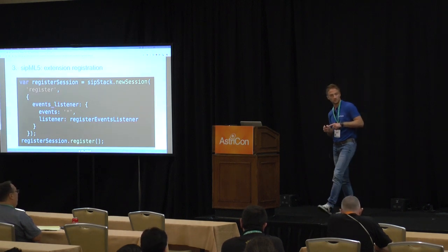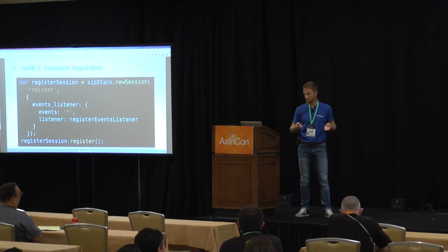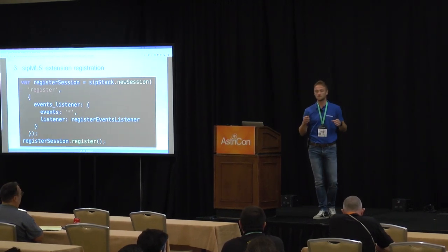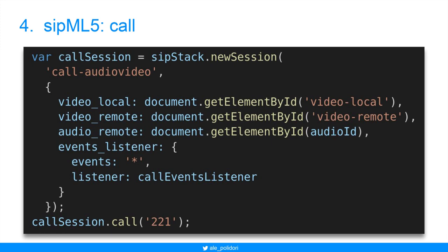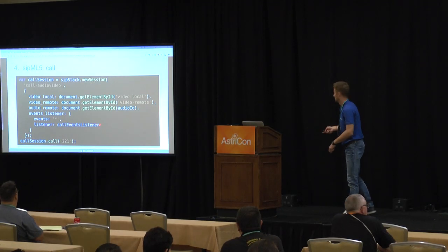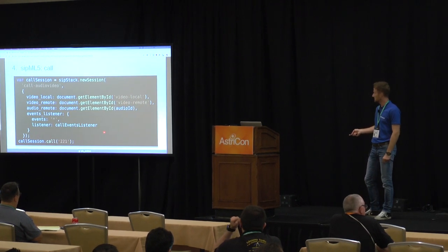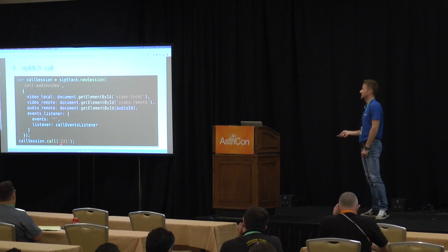At this point, if we have configured the server PBX correctly, the phone is registered and we can make new audio and video calls — calling again the new session API on the already created SIP stack. We pass some parameters to have all the audio and video streams, both local and remote. The parameters are simply references to HTML elements, so it's very simple and all using web standards. We also pass event listeners and specify the destination of the call.